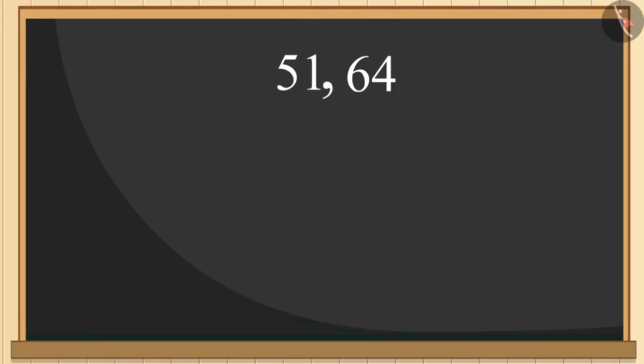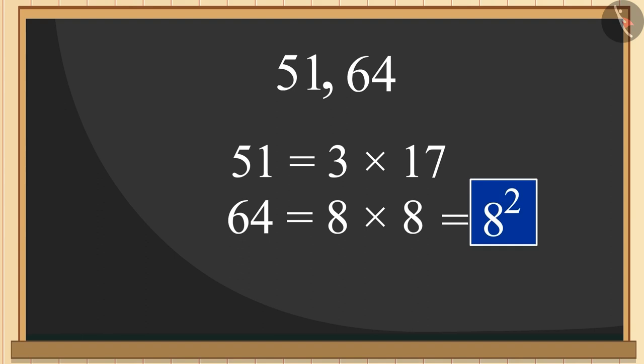Let us now examine these two remaining numbers. We can write the factors of both the numbers. Here, we can see that we can only write 64 as the square of a number. So, 64 is the perfect square.